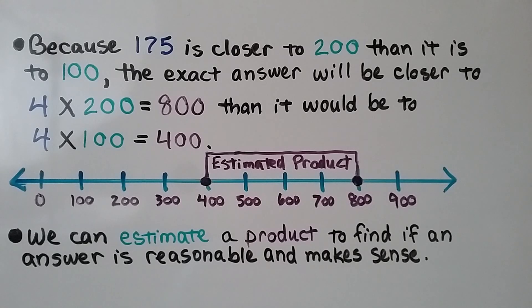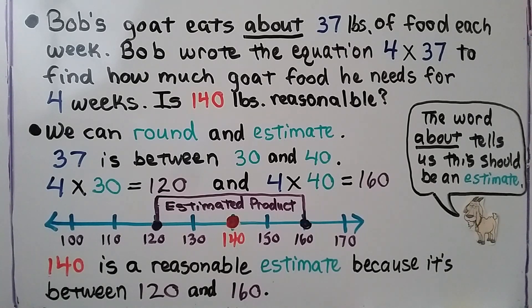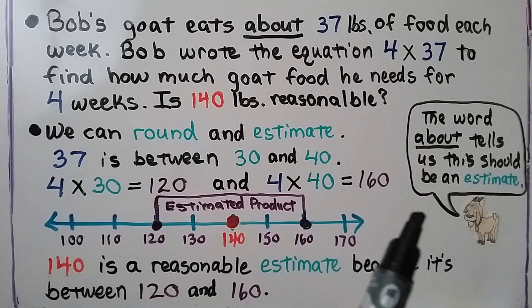We can estimate a product to find if an answer is reasonable and makes sense. Bob's goat eats about 37 pounds of food each week, and Bob wrote the equation 4 times 37 to find how much goat food he needs for 4 weeks. Is 140 pounds reasonable? Notice the word 'about' — it tells us this should be an estimate.